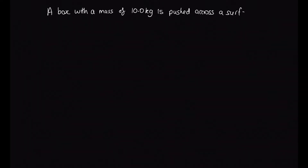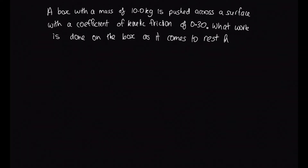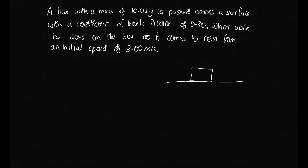Let's look at an example. A box with a mass of 10.0 kg is pushed across a surface with a coefficient of kinetic friction of 0.30. What work is done on the box as it comes to rest from an initial speed of 3 meters per second? Drawing a diagram: the box has velocity in one direction and the frictional force acts in the opposite direction to slow it down. We'll use F dot S to solve this, so we need to calculate the force and the displacement. The only force acting in the same direction as the displacement is the frictional force.